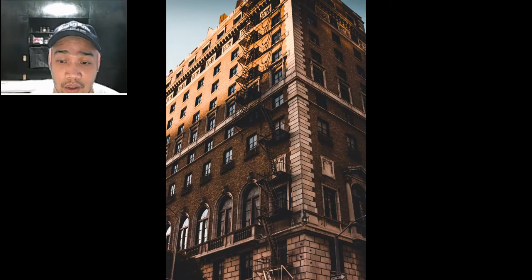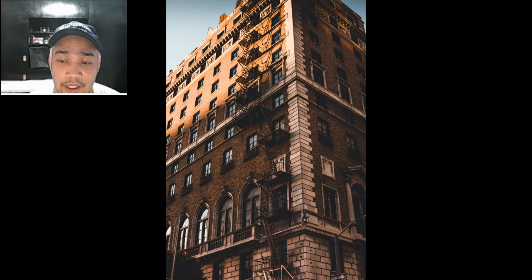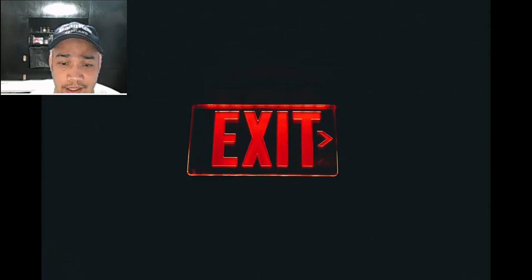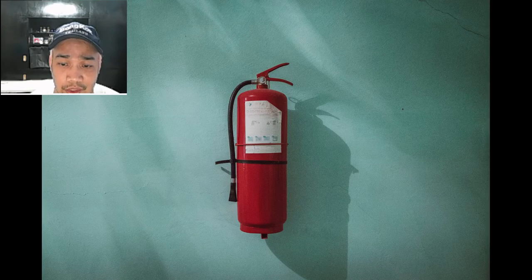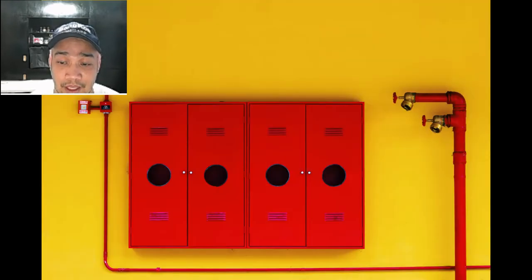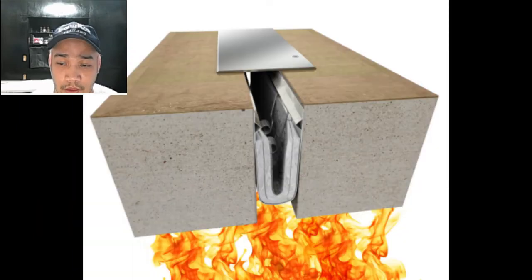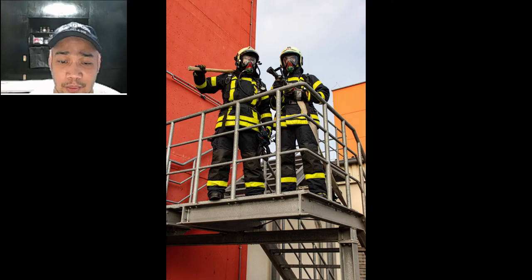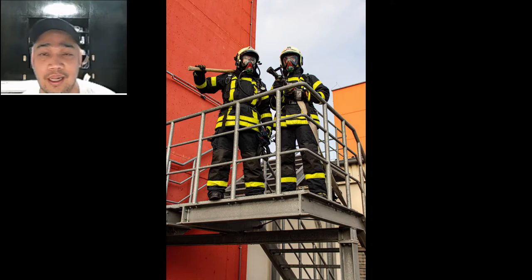These can include the number of exits, enclosed exit staircases, exit signs, emergency lighting systems, fire extinguishers, sprinklers, standpipes, and fire barriers. There is a lot involved in achieving an environment safe from fire, and to establish a reliable fire protection design, it should be a combination of all those features as specified in the code.